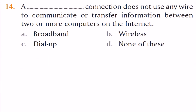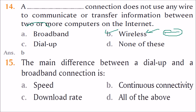A dash connection does not use any wire to communicate or transfer information between two or more computers on the internet. Since no wire is needed, the answer is wireless connection. Next, the main difference between dial-up and broadband is speed, continuity of connectivity, and the rate at which upload and download takes place — so the correct answer is all of the above, that is D.